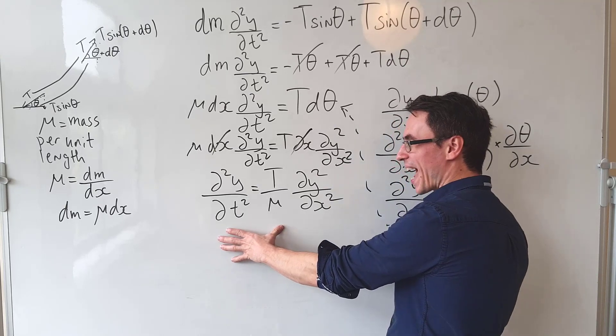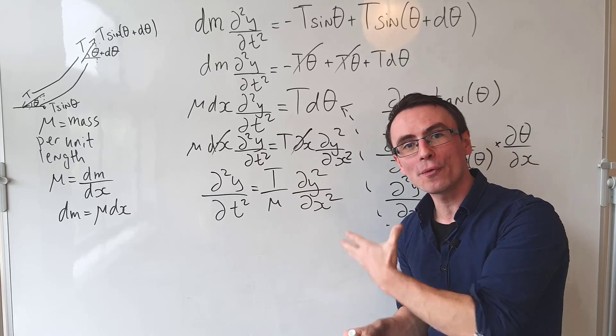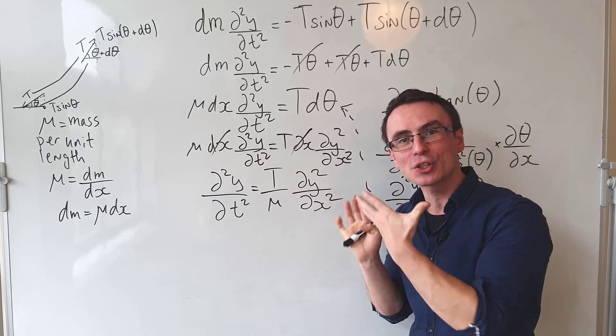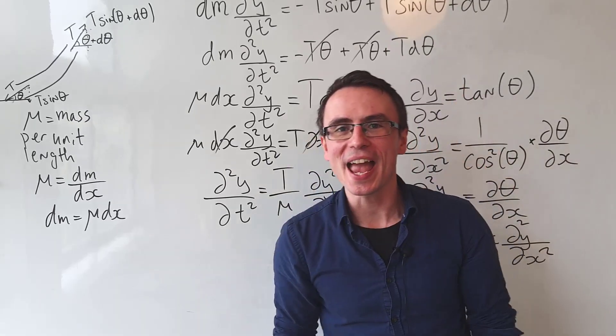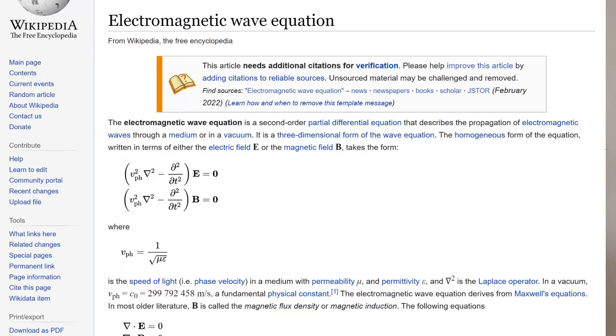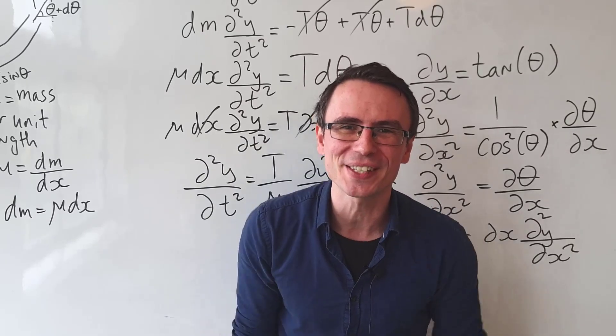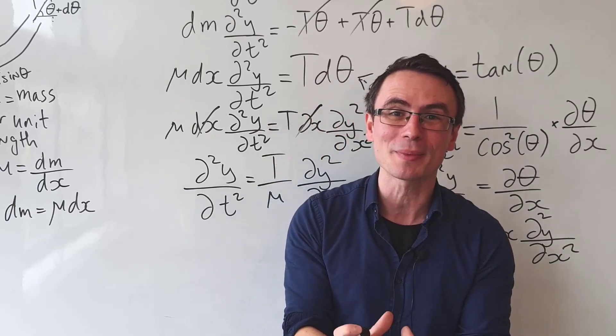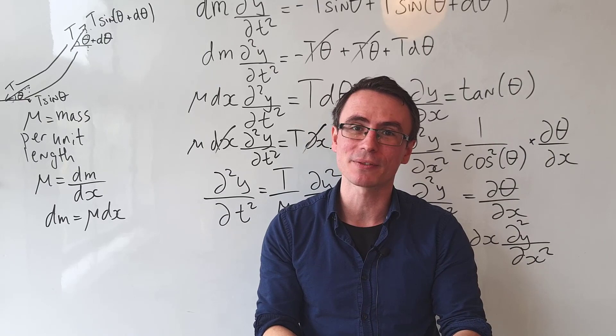If we were to do dimensional analysis, we realize that this factor over here actually has units of speed squared. It appears everywhere in physics. It appears in sound waves, it appears in electromagnetic waves, and even played a crucial role in one of the greatest unifications in physics, realizing that electromagnetic waves obey this equation and propagate at the speed of light.